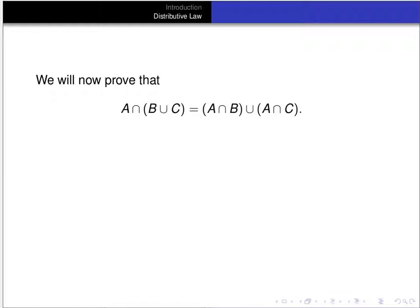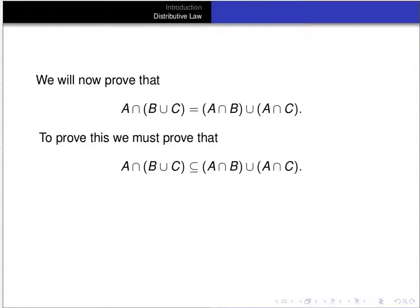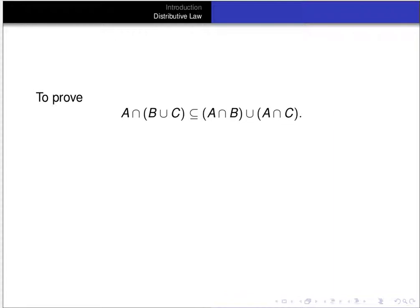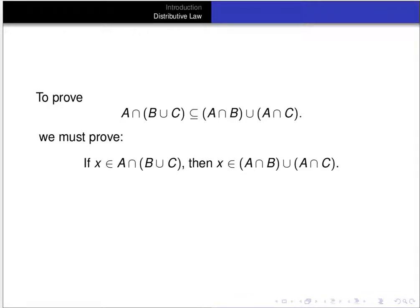Now that we've proved part one, we'll prove part two: that A∩(B∪C) = (A∩B)∪(A∩C). Again, to prove that, we have to prove that A∩(B∪C) is a subset of (A∩B)∪(A∩C), and that (A∩B)∪(A∩C) is a subset of A∩(B∪C). We'll get started proving the subset relation in this direction — showing A∩(B∪C) ⊆ (A∩B)∪(A∩C). To prove that, we must show that if x is in A∩(B∪C), then x is in (A∩B)∪(A∩C).